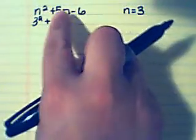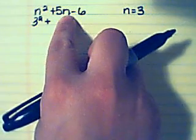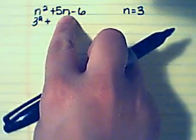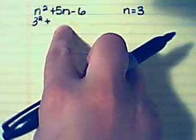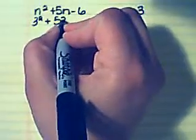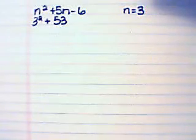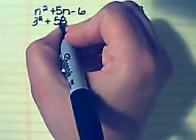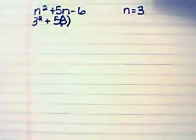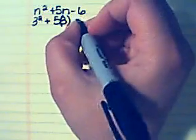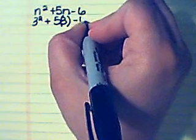So instead of n squared, I have 3 squared plus 5n. Now when we have 5 and n next to each other with no symbol in between, that means multiplication. So I have to do something to show that I need to multiply here. If I just write the 5 and the 3 next to each other, that could be easily mistaken for the number 53. So by placing parentheses around the 3, I can show that I need to multiply rather than having the number 53. And then I can't forget to add my minus 6 here.